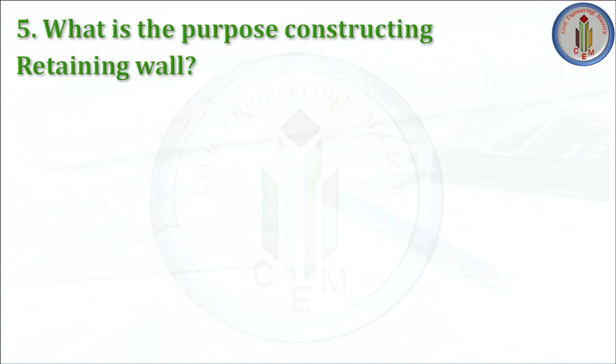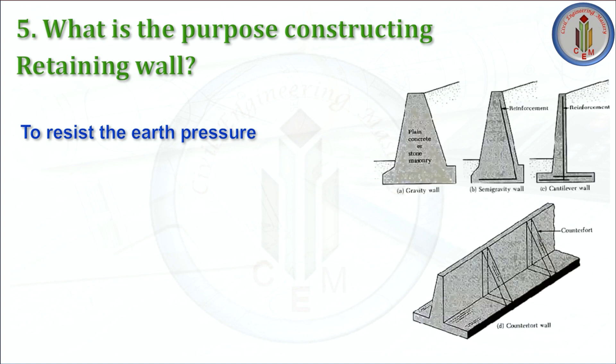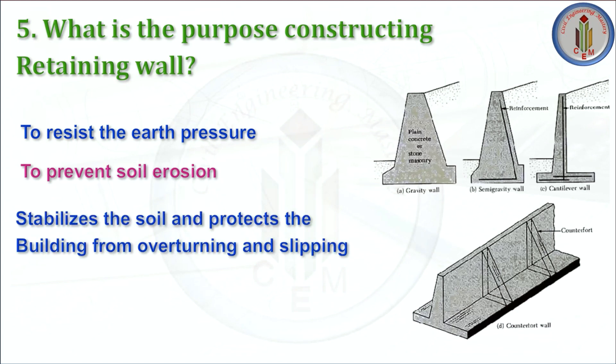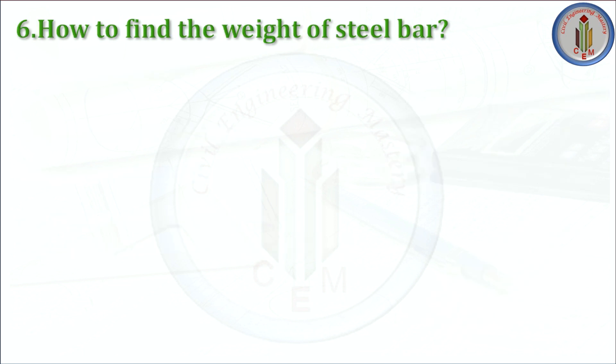What is the purpose of constructing a retaining wall? The main purpose is to resist the earth pressure and to prevent soil erosion. It also stabilizes the soil and protects the building from overturning and slipping.